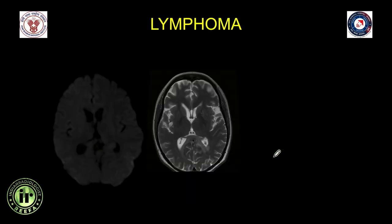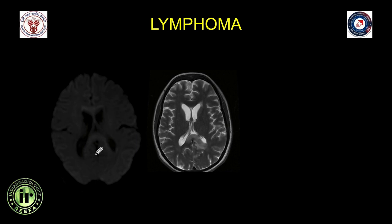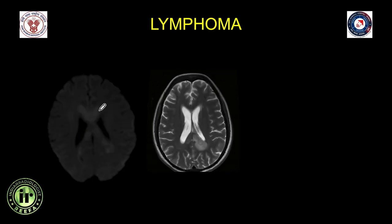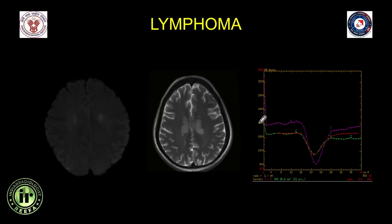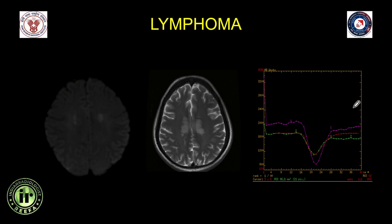Another lymphoma example shows a periventricular lesion with restricted diffusion, intermediate to hyperintense T2 signal, and hyperperfusion — confirmed as lymphoma. However, baseline overshoot is not seen here because leakage correction algorithms were applied. Remember: absence of baseline overshoot does not rule out lymphoma.